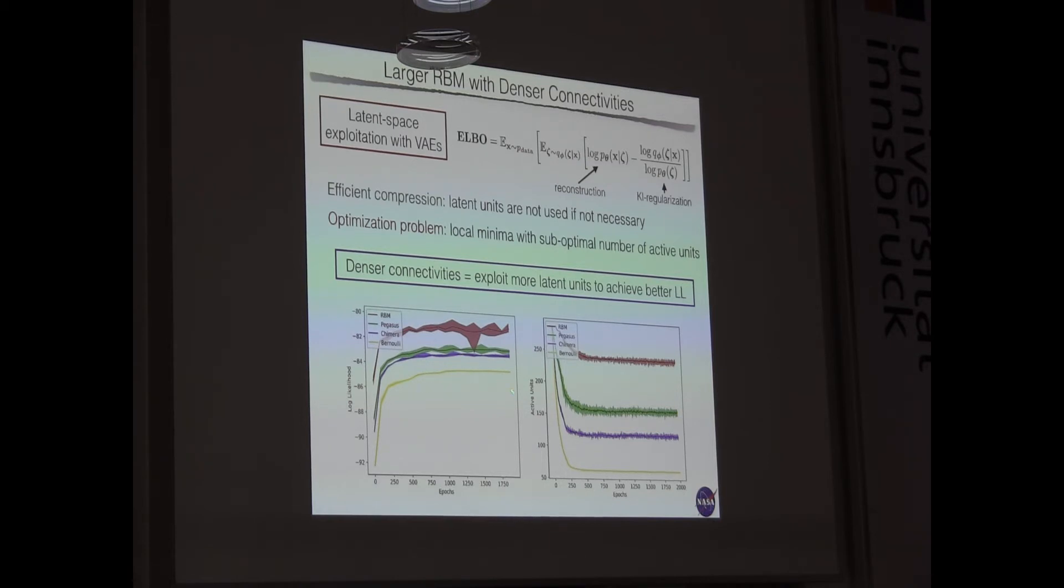But one thing that is nice to realize is that if we increase the density or the connectivity of our graph, we just improve the performance of the model and we exploit a larger number of latent units. And again, we need the larger number of latent units because eventually we want to use large RBM. We want to make something from this large RBM complex. So here I have Bernoulli means no connectivity, just independent discrete Bernoulli variables. Purple line is Chimera, green is Pegasus, red is fully connected RBM. And a nice thing to notice is that there is a fairly large amount of optimization for the Chimera graph, but you just plug in the Pegasus graph, it's more connected, it just works better.